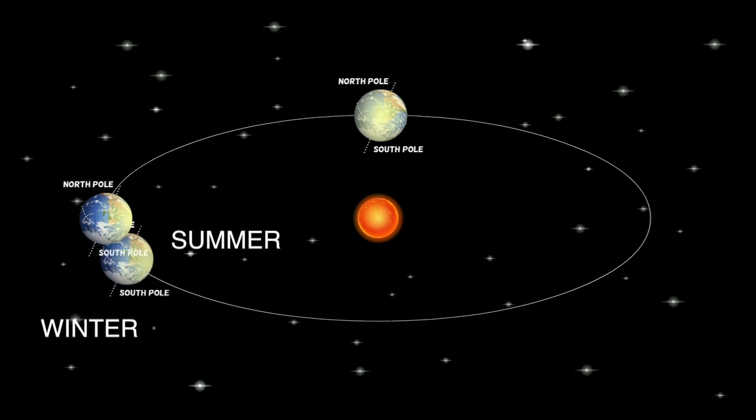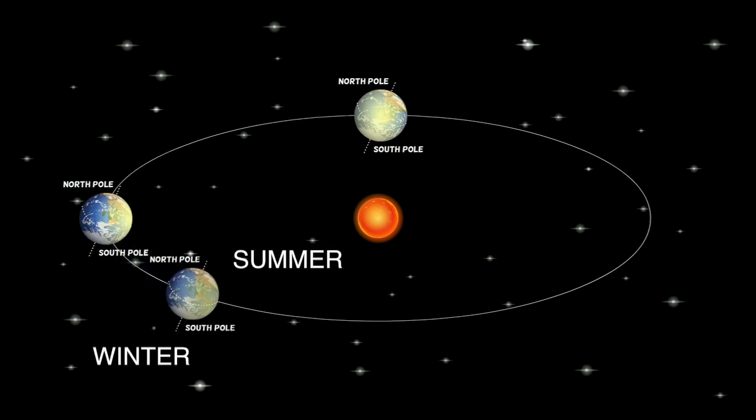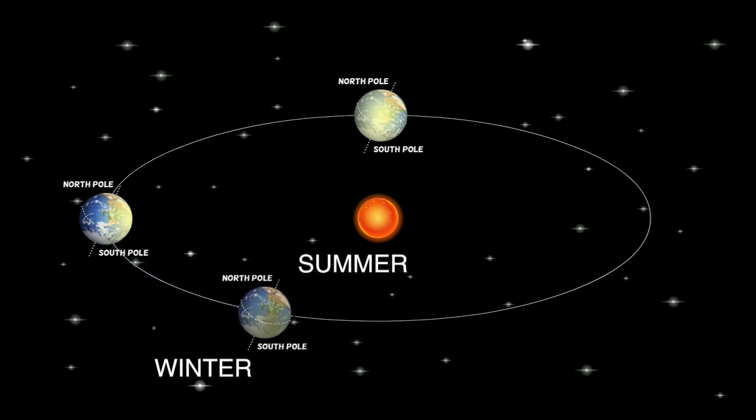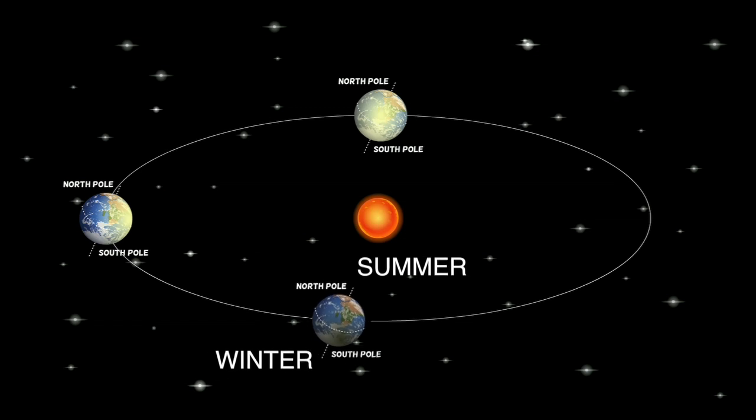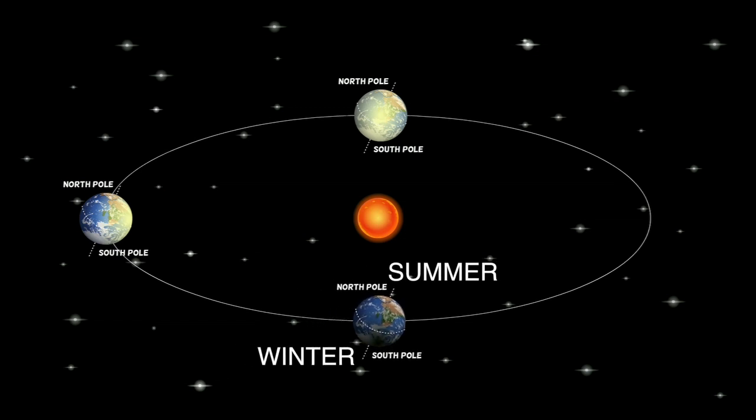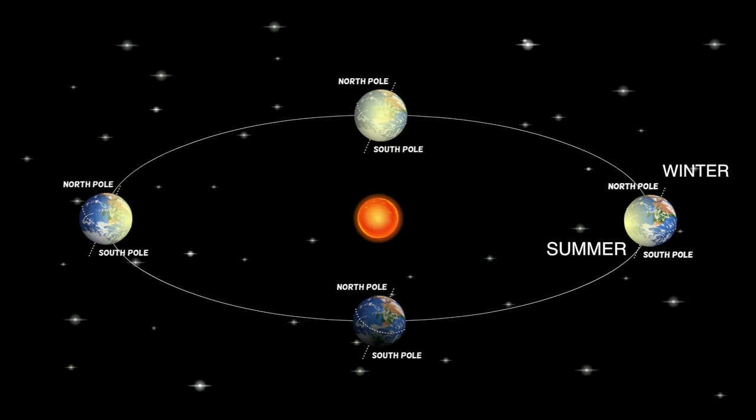Summer comes to the Northern Hemisphere when the North Pole angles back towards the Sun, and then it is winter in the Southern Hemisphere, which is tilted away from the Sun at this time. Winter in the Northern Hemisphere is caused by the North Pole being angled away from the Sun. At the same time, it is summer in the Southern Hemisphere, which is angled towards the Sun.